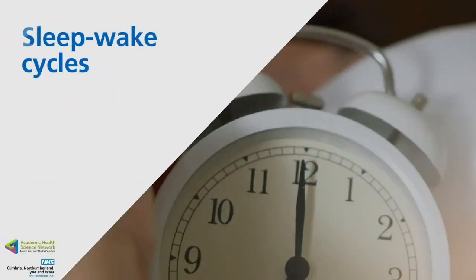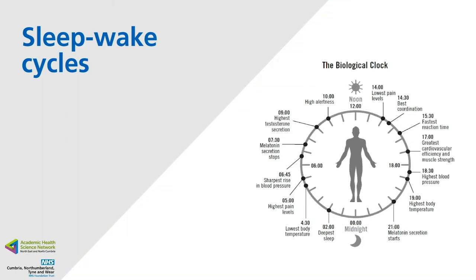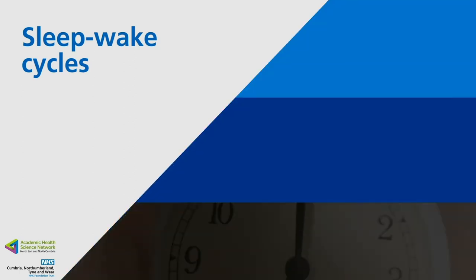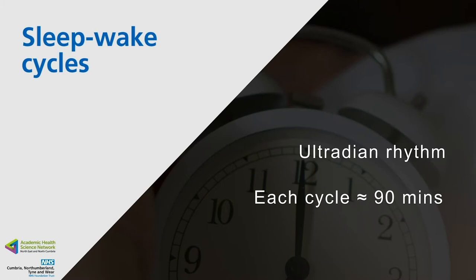There are two naturally occurring rhythms that govern our sleep-wake cycle. All complex life has a sleep-wake cycle which takes place over a 24-hour period. This is known as the circadian rhythm — 'circa' meaning 'about' and 'dia' meaning 'day'. The other rhythm, our ultradian rhythm, governs our level of alertness during the day and the depth of our sleep at night. Each cycle of the ultradian rhythm lasts roughly 90 minutes.